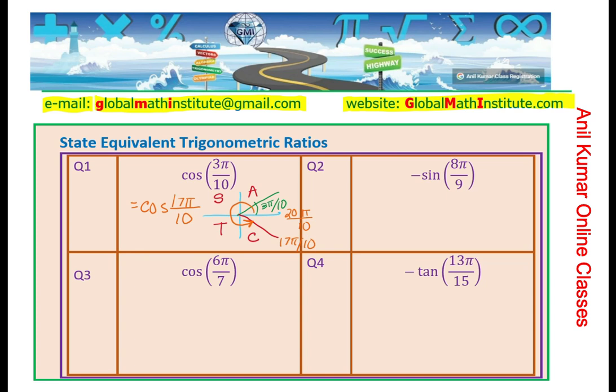Now let's look into question number 2, which is negative sine(8π/9). We will follow the same method. The method being figure out on a quadrant plane where you are. In this particular case, as you can see, 8π/9 means π/9 less than π.